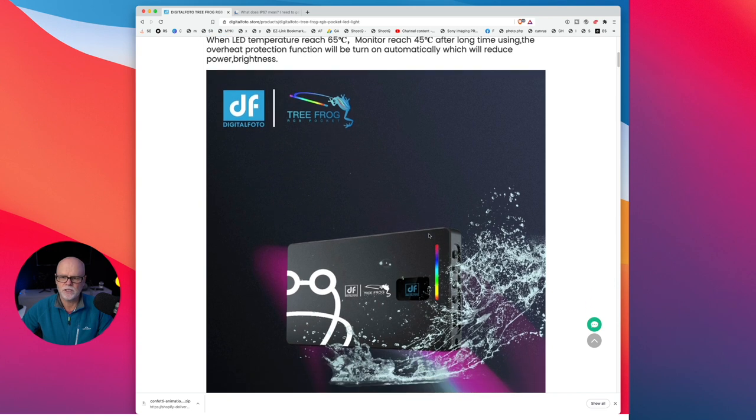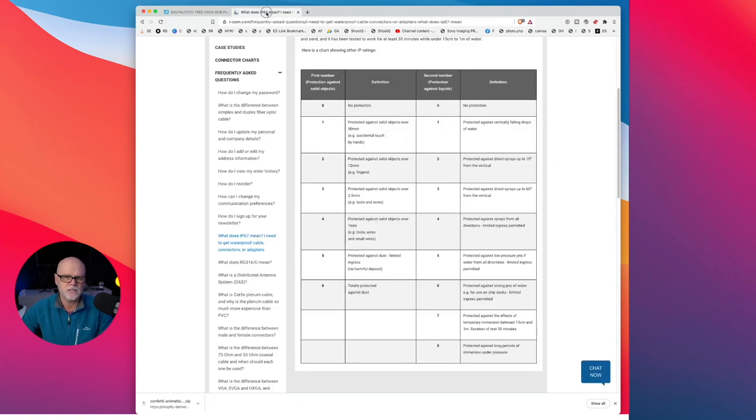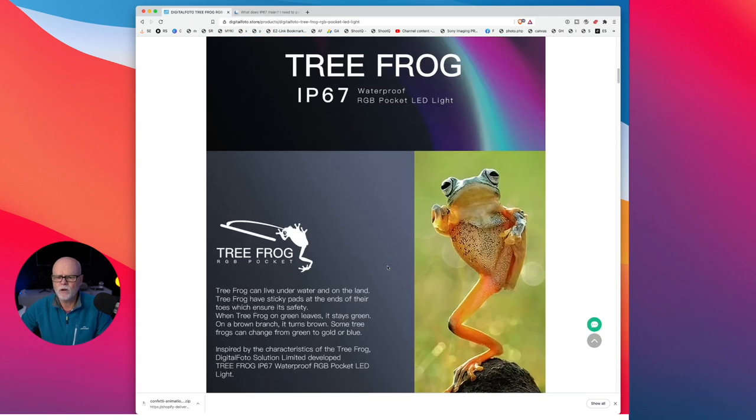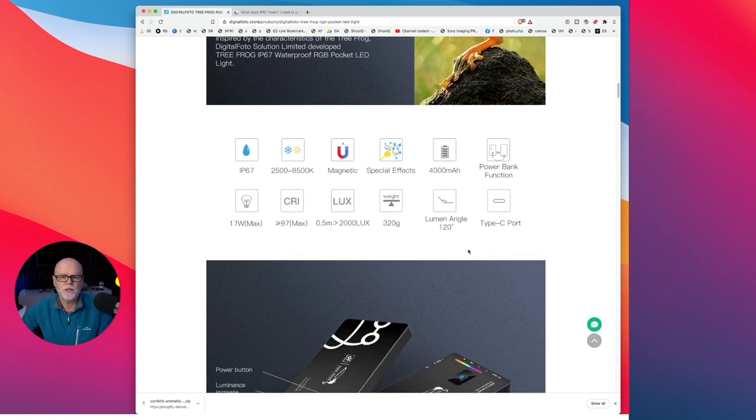Now there's a couple of things with this. It's actually waterproof and it's IP67. Now if you're wondering what IP67 means, I did find this page that explained it. The 6 means it's totally protected against dust, and the 7 means it's protected against the effects of temporary immersion between 15 centimeters and 1 meter for a duration of 30 minutes. So it's not completely waterproof, but if you did drop it in water or something like that, or wanted to use it for a very short period of time, it probably would be okay.